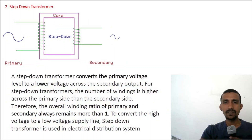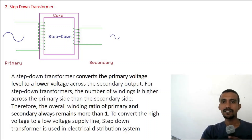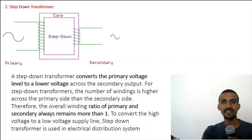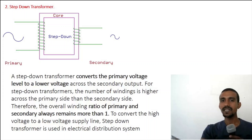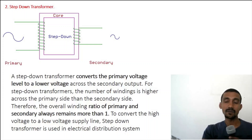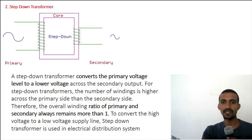Next is the step-down transformer. In the step-down transformer, the primary windings are more and the secondary windings are fewer. The output is a lower voltage. The step-down transformer reduces high voltage to a lower voltage.